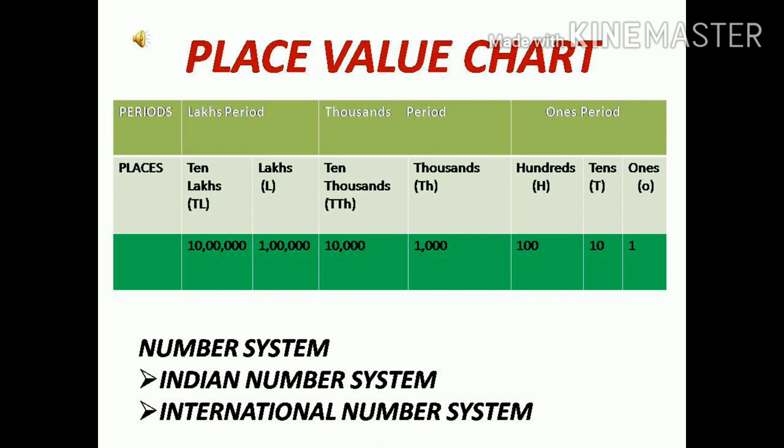We split a large number into periods, or you can say into groups, starting from the right. To make it easy, a 6-digit number has 3 periods: ones period, thousands period, and lakhs period, as you can see in the picture. The first 3 places from the right make 1 period, the next 2 places make the thousands period, and the last 2 places make the lakhs period.